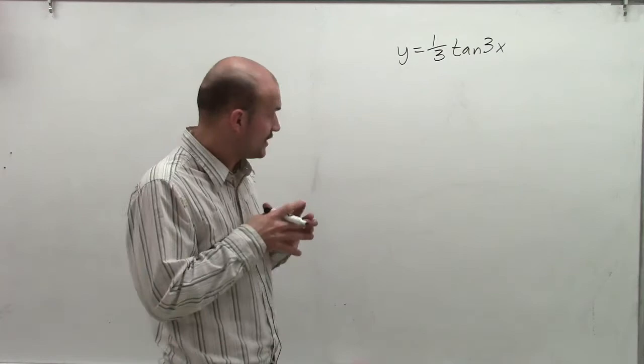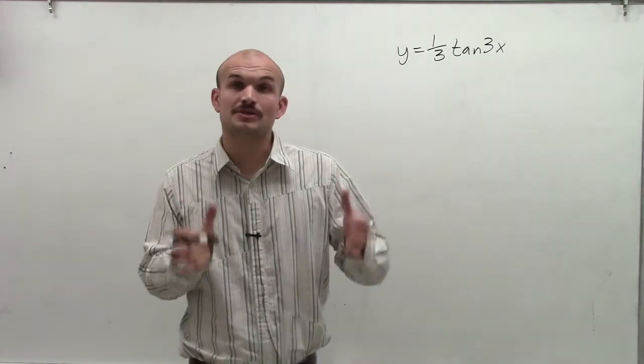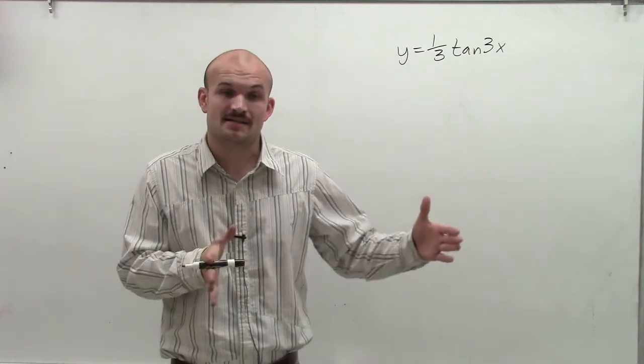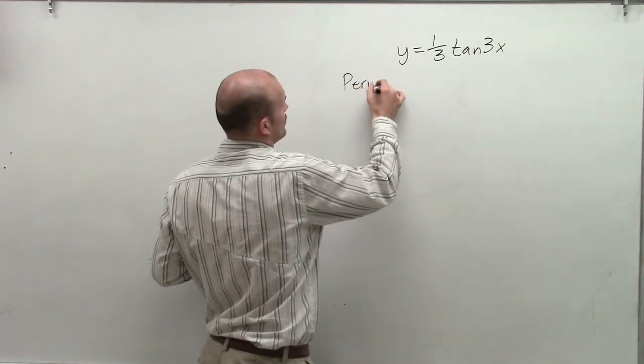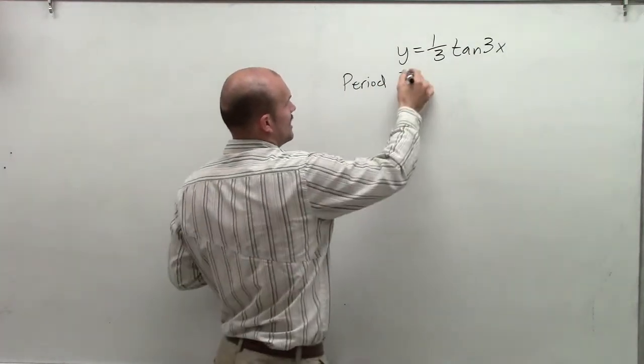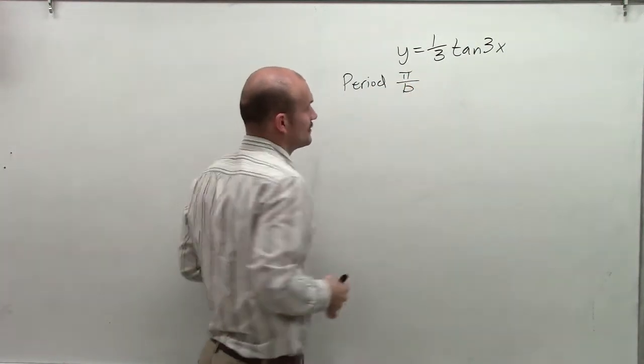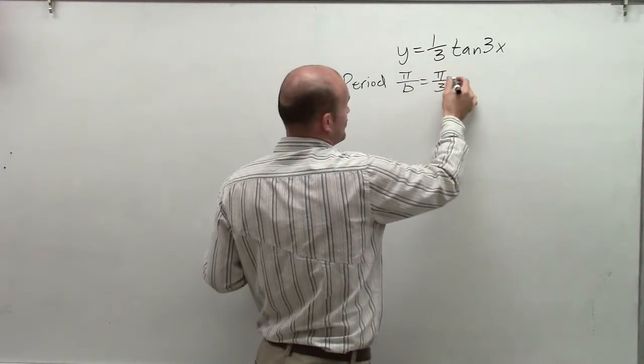So when graphing 1/3 tangent of 3x, the main important thing for tangent is we need to determine our initial period, the start and the end, and then also look at our period. To find the period, remember the first thing we're going to do is take pi and divide it by b. In this case, our pi divided by b is going to be pi divided by 3.